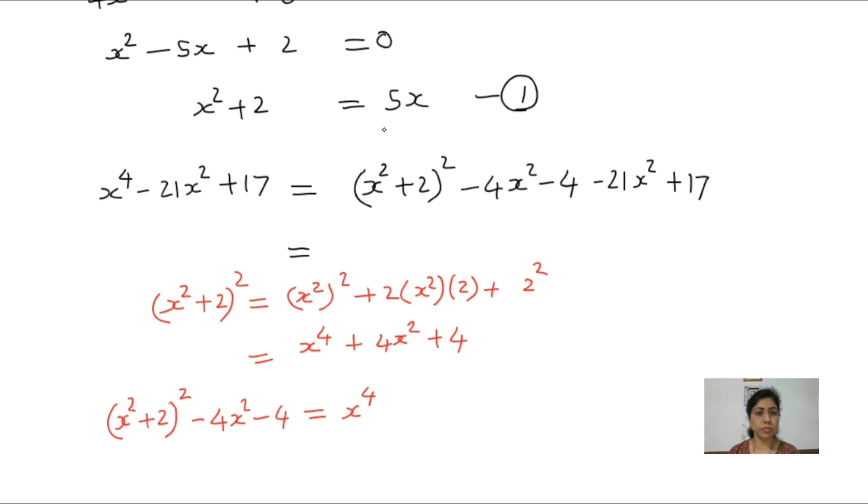Now here we can substitute this value x square plus 2 from equation 1. We can write 5x. So 5x square minus 4x square minus 4 minus 21x square plus 17.